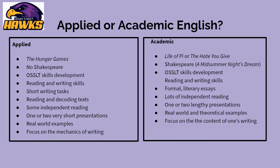In terms of course content in the applied stream, there's no Shakespeare. We would read a novel such as The Hunger Games, versus in the academic stream, we would read Shakespeare — typically A Midsummer Night's Dream — and the novel selection might be Life of Pi or The Hate U Give. In both courses, however, there's Ontario Secondary School Literacy Test skills development, reading and writing skills. The writing is a little different: in the applied course we focus on short writing tasks, versus formal literary essays in the academic stream.